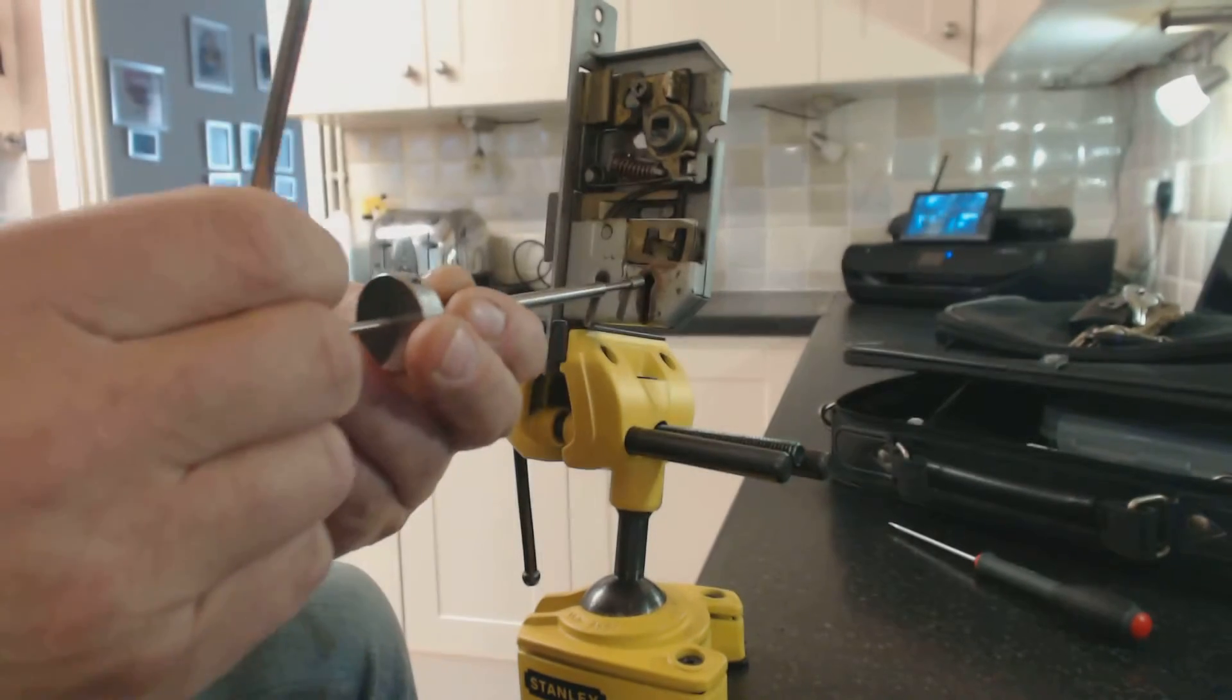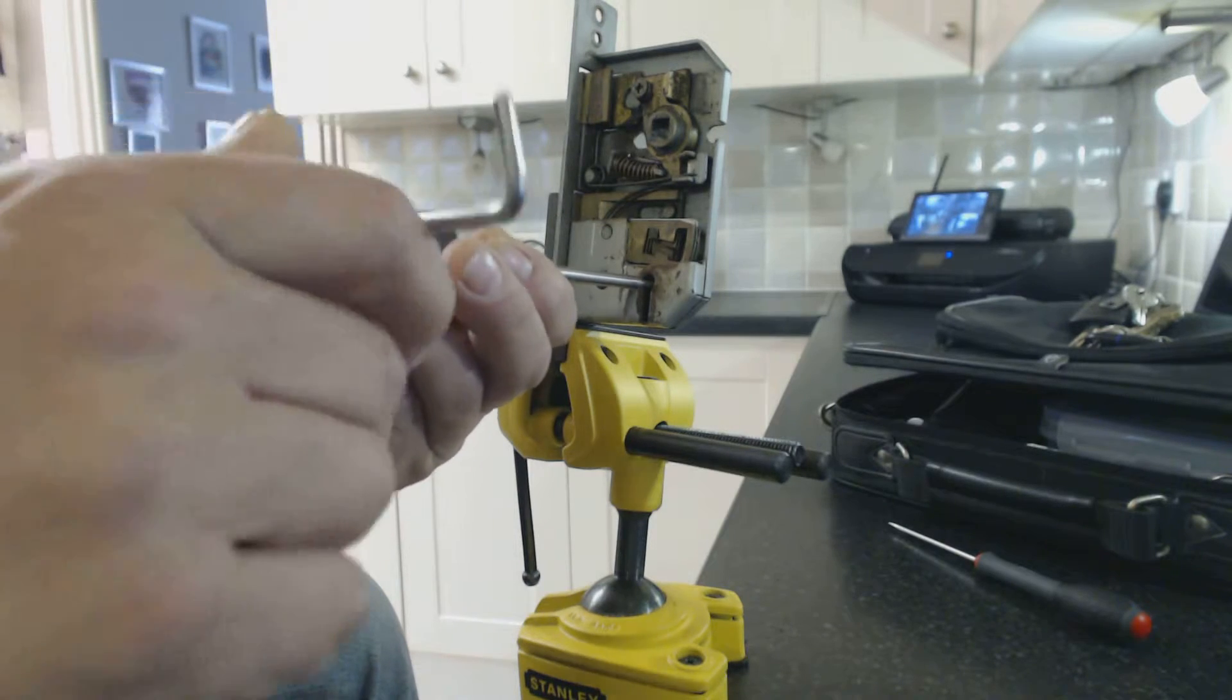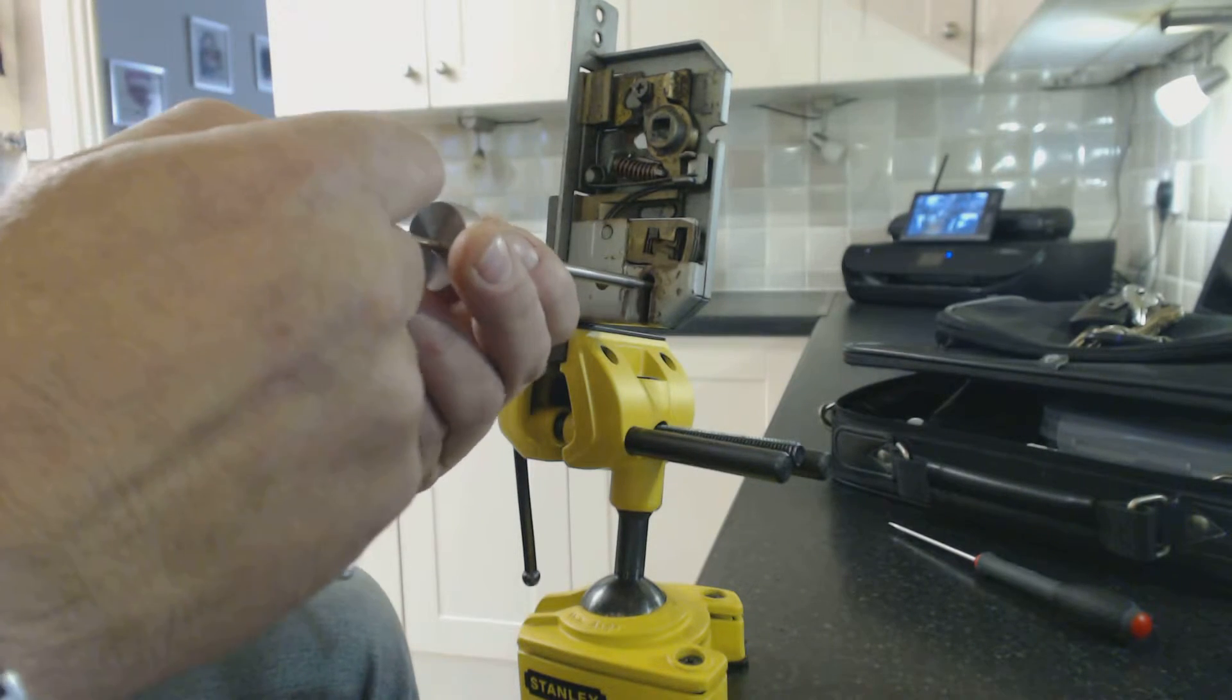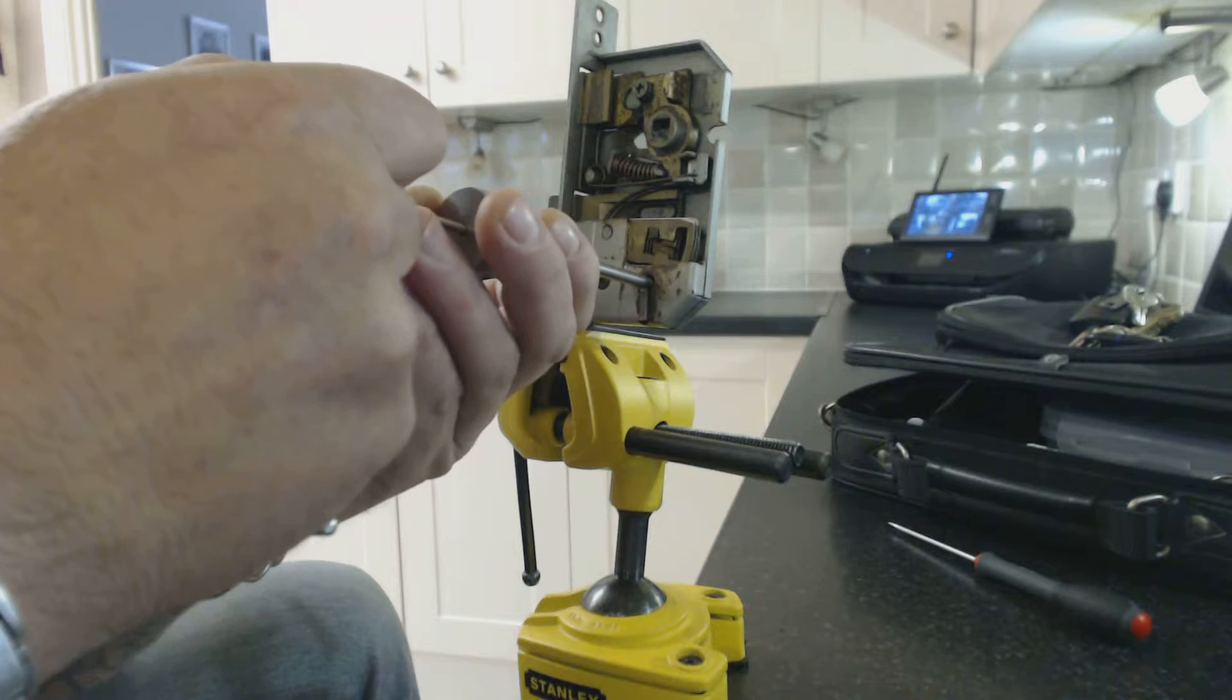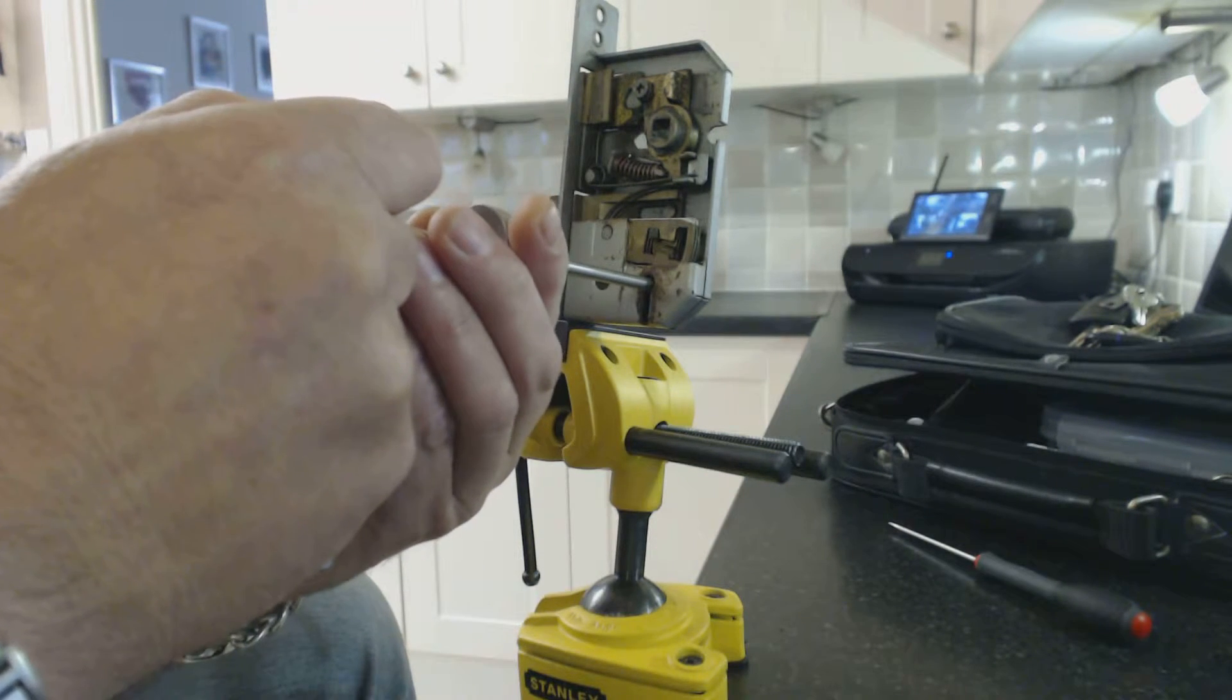But let's see how we get on. So picking, the first part holds the bolt. The second one picks the levers.